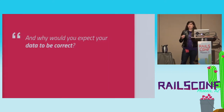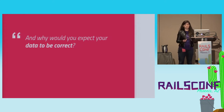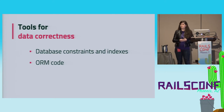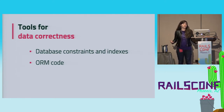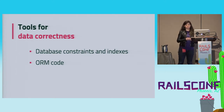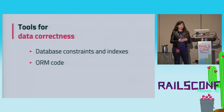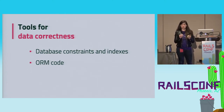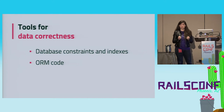Let's talk about causes and how your data can go wrong despite your best intentions. I'd like to start by reframing that and asking: why would you expect your data to be correct? Five years ago, I would say: but look, I have all these tools for data correctness. I have database constraints, ORM code, and active record validations. They're going to be in my corner. They're going to keep me safe.